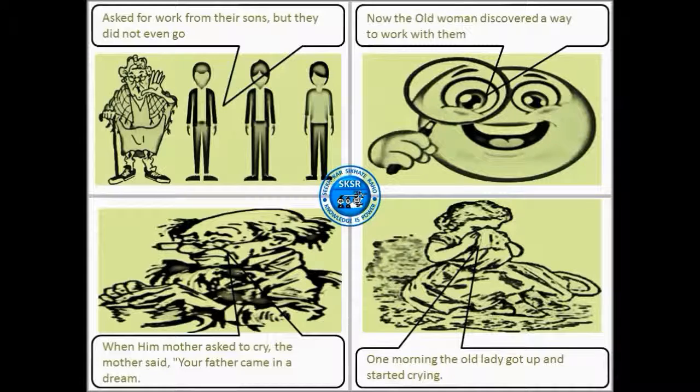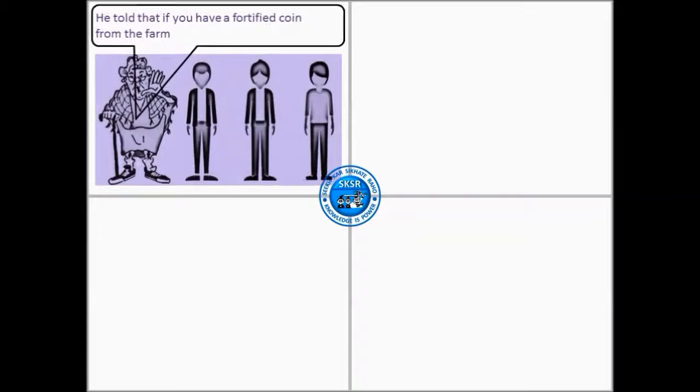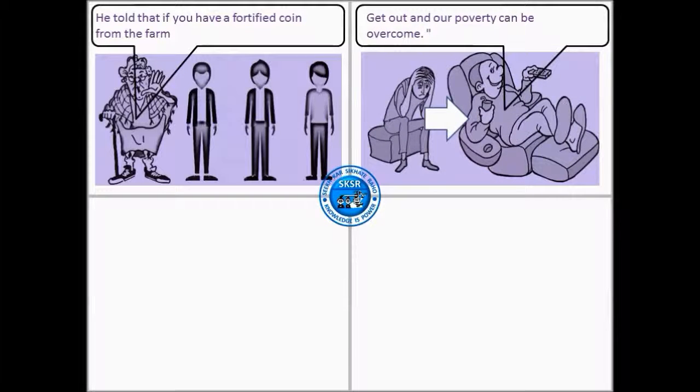One morning the old lady got up and started crying. When the mother asked why she was crying, the mother said your father came in a dream. He told that if you have 40-45 coins from the farm, you can get out of poverty and the old lady can be overcome.